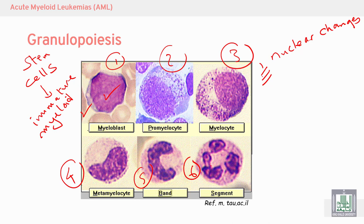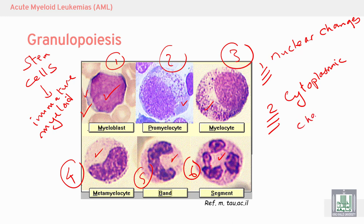If we compare the cytoplasm across stages 1 through 6, we can see cytoplasmic change. This is what is called granulopoiesis.